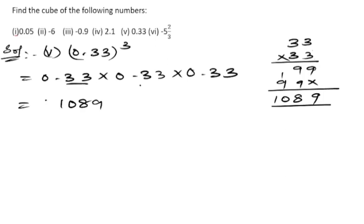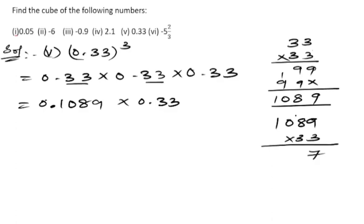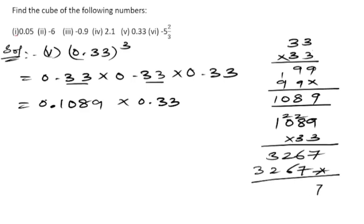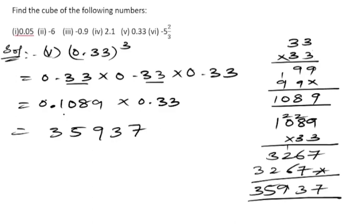Counting the decimals for 0.33 squared: two plus two is four, so 0.1089. Now multiply 0.1089 into 0.33: multiply 1089 by 33. Three nines are 27, three eights are 24 plus 2 is 26, three zeros are 0, three ones are 3 — giving 3267. Adding the rows gives 35937. Counting decimals: four plus two is six, so the answer is 0.035937.